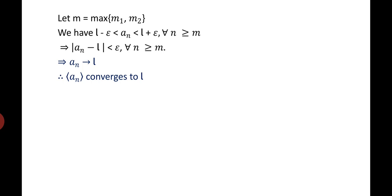Let m = max(m_1, m_2). Combining those two, we can write l - epsilon < a_n < l + epsilon for all n ≥ m. Using the definition, this can be written as |a_n - l| < epsilon for all n ≥ m. This implies a_n tends to l, or a_n converges to l.